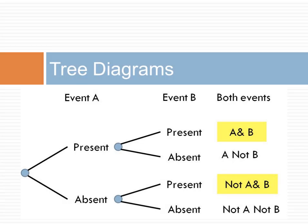In tree diagrams, the probability of an event occurring can be calculated from the sum of all possible ways that the event might occur. Here, the probability of event B occurring can be calculated from the joint events A and B occurring and not A and B occurring.